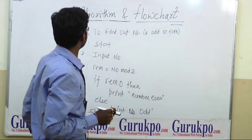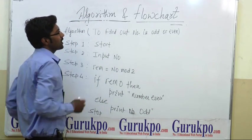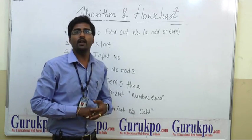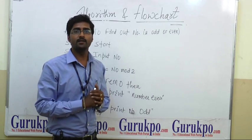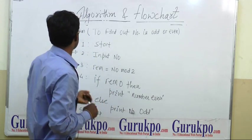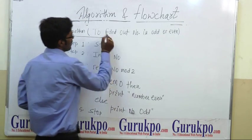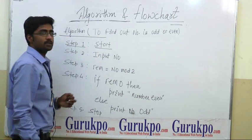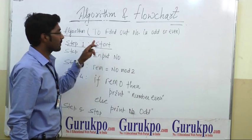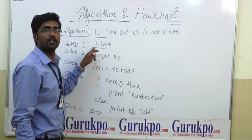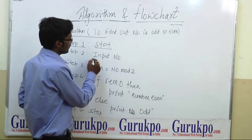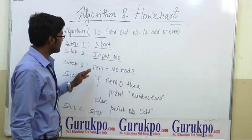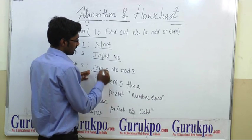Now, what happens in an algorithm? Suppose we have to write an algorithm to find whether a given number is odd or even. Then how can we start? The algorithm steps: step one — start, because any program has a start and a respective end. Step two — we have to take the input number and then find the remainder.